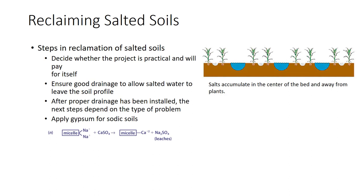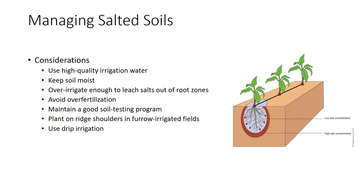Saline-sodic soils must be treated to remove sodium. If they are simply leached with low salt water, calcium and magnesium salts are removed but sodium remains in the soil, forming a sodic soil. Thus, gypsum treatments are useful. Saline soils, especially irrigated land in arid climates, may be managed to reduce salt problems. If possible, use high-quality irrigation water. Keep soil moist — water dilutes soil salts, lowering the effect of osmotic potential. Salts tend to be most damaging in dry soil when the salts are concentrated and both osmotic and matric potential are high. Over-irrigate enough to leach salts out of the root zones; the amount of extra water needed is called the leaching fraction. Avoid over-fertilization — most fertilizers are salts and can compound salinity problems. Maintain a good soil testing program to monitor salinity and avoid over-fertilization.